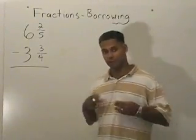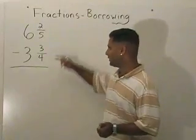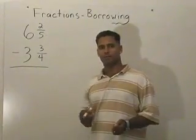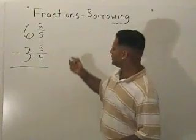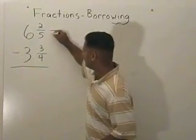The first thing we have to do is make sure that we have a common denominator. We see that we have a 5 and a 4. The first common multiple of 5 and 4 is 20. So we are going to change each of these two denominators into the number 20.